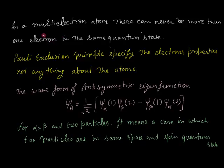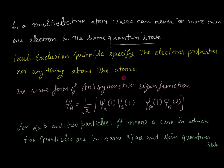According to the Pauli exclusion principle, in a multi-electron atom there can never be more than one electron in the same quantum state — where quantum state means the space quantum state and spin quantum state combined. So two electrons cannot exist in the same quantum state. Importantly, the Pauli exclusion principle specifies properties of electrons only, not of atoms.